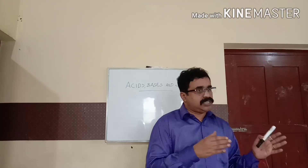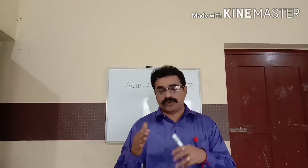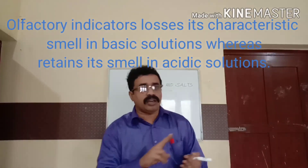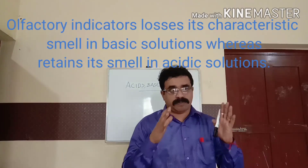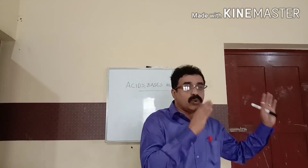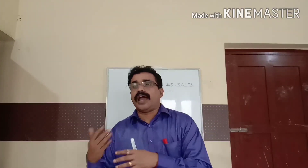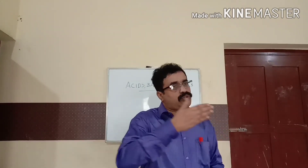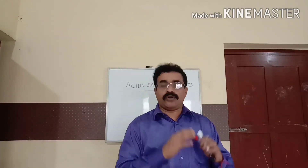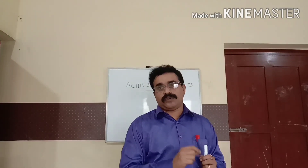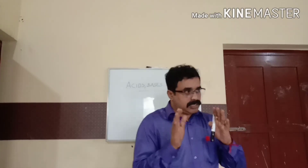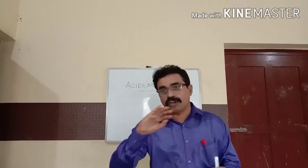Olfactory indicators are substances which have different odor in acidic as well as basic solution. All these olfactory indicators lose their characteristic smell when we add a basic solution to them. Whereas if an acidic solution is added, the indicator retains its smell. For example, if you add acidic solution to clove oil and smell it, you will feel the smell of clove. Whereas if you add basic solution to it, the smell of the clove oil is lost.